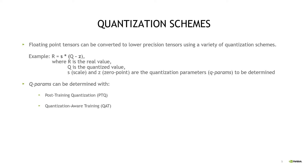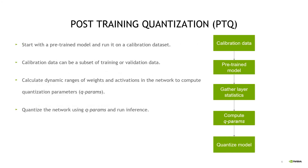Q params can be determined either via post-training quantization, or PTQ, and quantization-aware training, or QAT. In PTQ, we start with a pre-trained model and run it on the calibration dataset, which can be a subset of training or validation data. We calculate the dynamic ranges of weights and activations, which are then used to compute quantization parameters or Q params. We then quantize the network using Q params and perform inference.